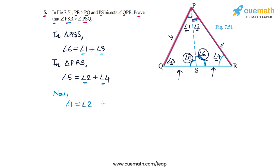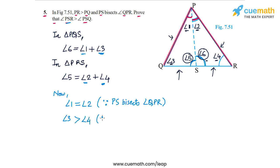Angle 1 equals angle 2 because PS bisects angle QPR — this is given. Now, what is the comparison between angle 3 and angle 4? Angle 3 is greater than angle 4, because the side opposite angle 3, which is PR, is greater than the side opposite angle 4, which is PQ. This is also given: PR is greater than PQ.